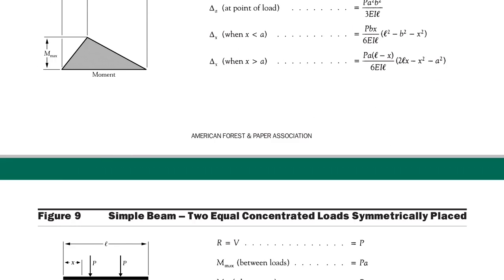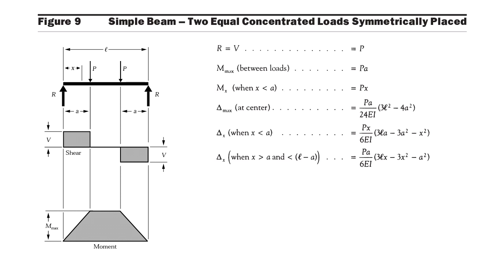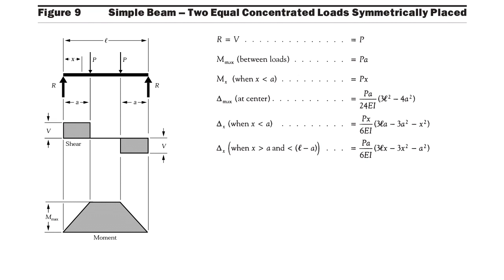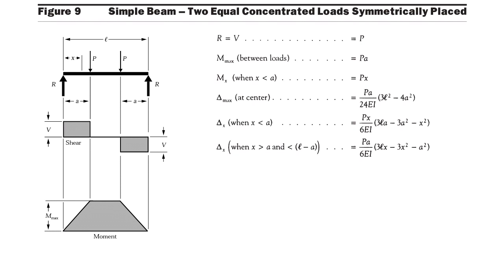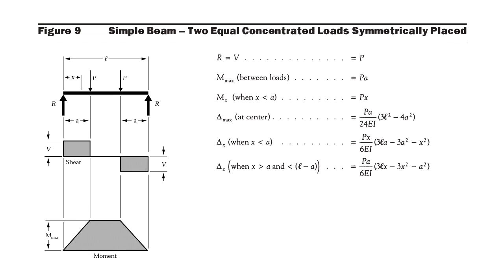Next condition: a simply supported beam carries two equal concentrated loads symmetrically placed, as shown in figure 9. Each load P is placed at a distance 'a' from each support. The maximum bending moment value is Pa. The maximum deflection is Pa/24EI multiplied by (3l² − 4a²). The maximum bending moment occurs between the two loads, not at the center.